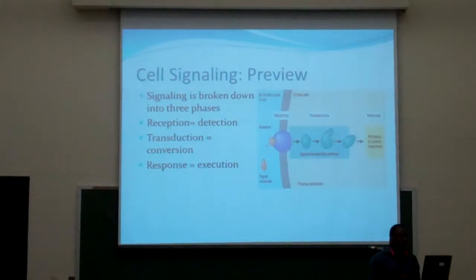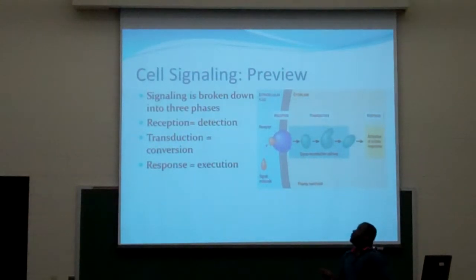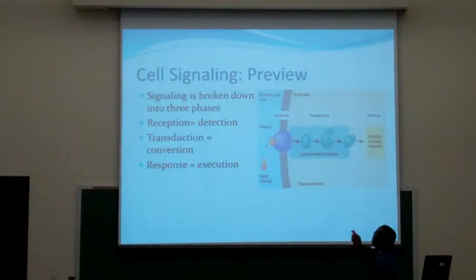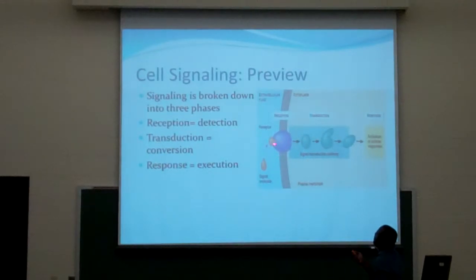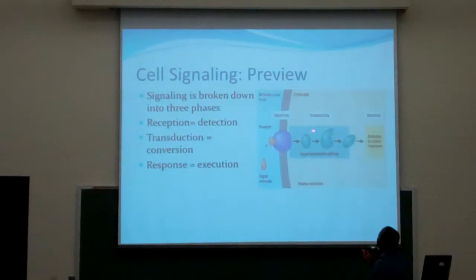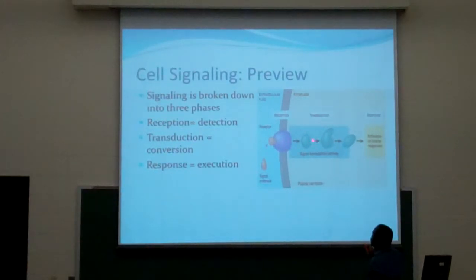This is just a preview of cell signaling. There are three steps basically in cell signaling: we have reception, we have transduction, and then we have response. Reception is basically what the cell receives as a signal. Transduction is what converts the signal into an understood language. When a receptor receives a signal, it goes through the transduction pathway, and then it's broken down into different signals — different codes and meanings for the cells to understand the response stage.